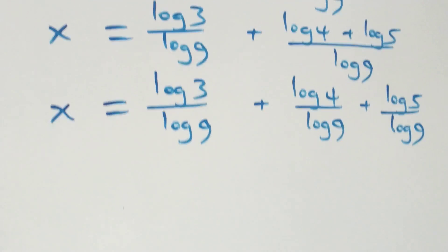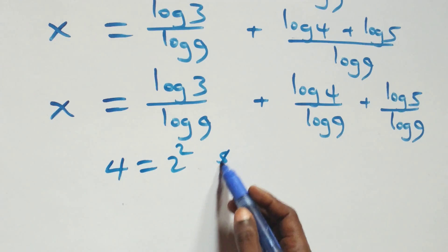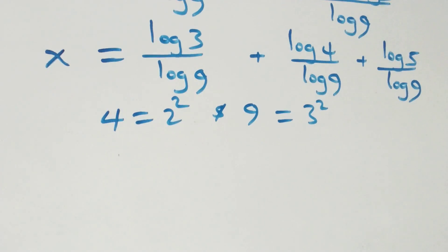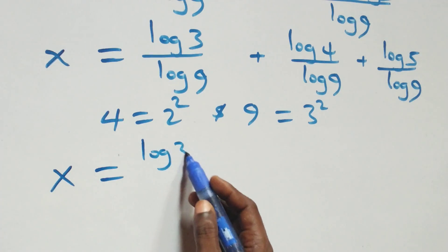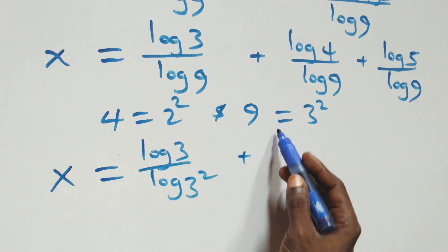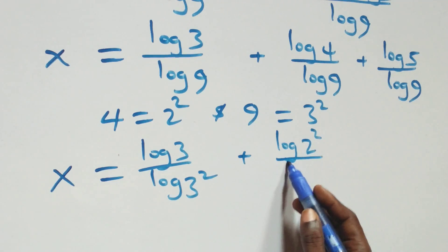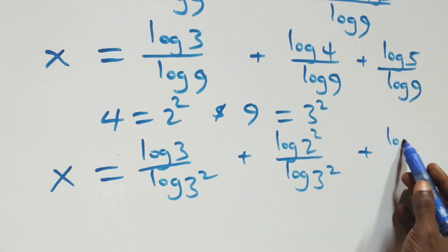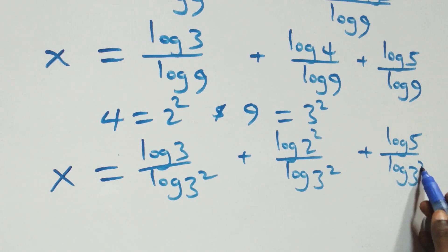The next step: we can express 4 as 2 times 2, which is 2 squared, and also 9 as 3 times 3, which is 3 squared. So all we have here becomes x equals log 3 over log 3 squared, plus log 2 squared over log 3 squared, plus log 5 over log 3 squared.